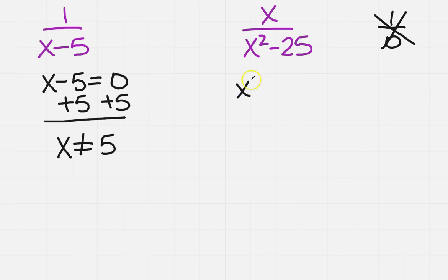Over here on the right, we want to do x squared minus 25 equals 0. There are a couple ways to do it. The first one is you can see it's a difference of two squares.